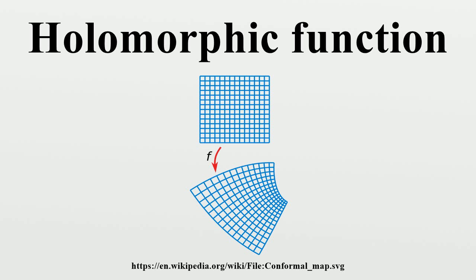If the limit exists, we say that f is complex differentiable at the point Z0. This concept of complex differentiability shares several properties with real differentiability: it is linear and obeys the product rule, quotient rule, and chain rule. If f is complex differentiable at every point Z0 in an open set U, we say that f is holomorphic on U.